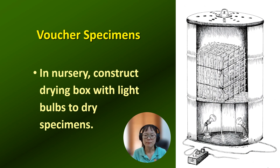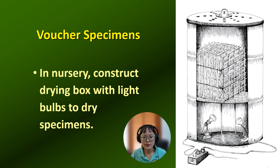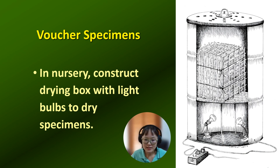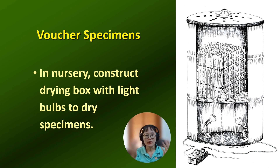After collecting plant materials for the voucher specimen in the field, you stack them up and tie them with rope. After you come back to the tree nursery or lab, make sure to dry them. Here is an example of a very simple drying box. The heat source — a light bulb — is at the bottom. We make shelves in the drying box to hold the stacked plant specimens, with a lid on top. The lid should have ventilation holes so moisture from the plant specimen can escape.